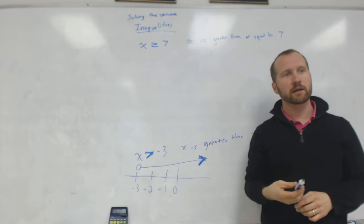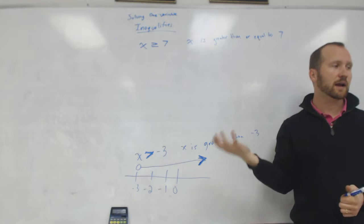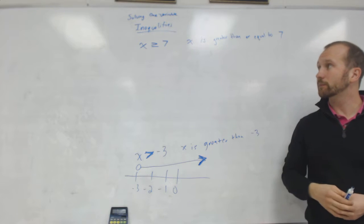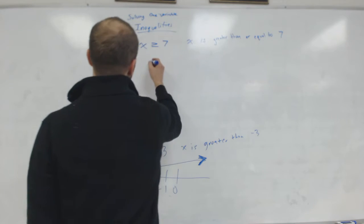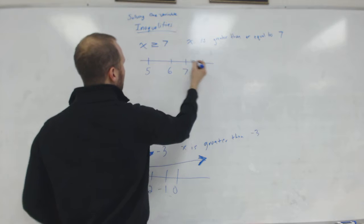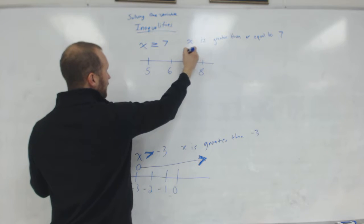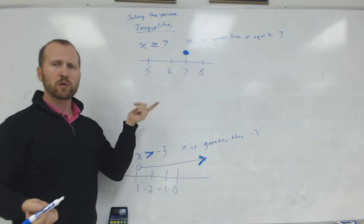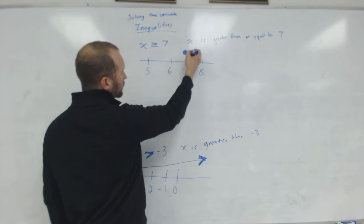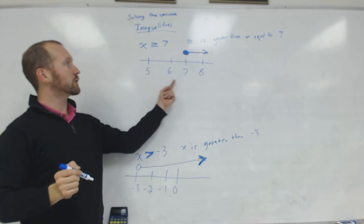Think about going to an amusement park where they say this ride is only open to ages 7 and up. So the age of people who ride would be greater than or equal to 7, because you could be 7. On the graph this looks a little different — it uses a filled-in circle, or a solid dot. So if X is greater than or equal to 7, we start with a filled-in circle at 7 and the arrow points to the right, showing all numbers greater than or equal to 7. The symbol tells us which way to make our arrow go.